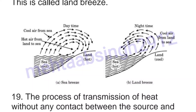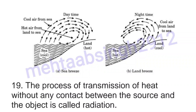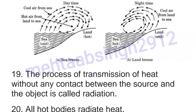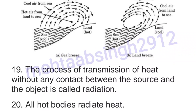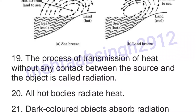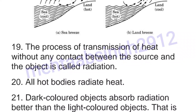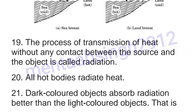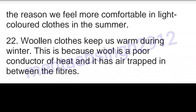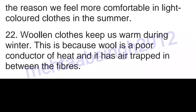Nineteenth, the process of transmission of heat without any contact between the source and the object is called radiation. Twentieth, all hot bodies radiate heat. Twenty-first, dark colored objects absorb radiation better than light colored objects. This is the reason we feel more comfortable in light colored clothes in the summer.